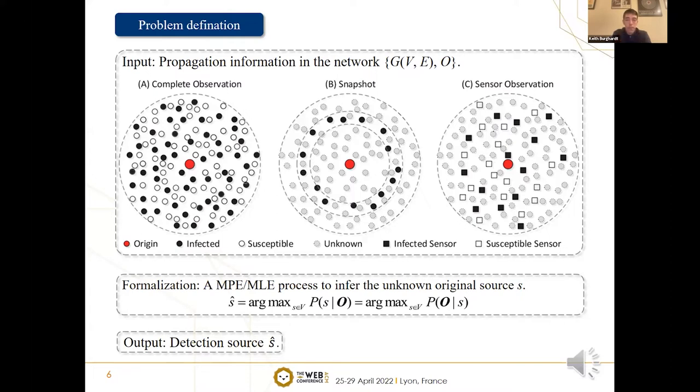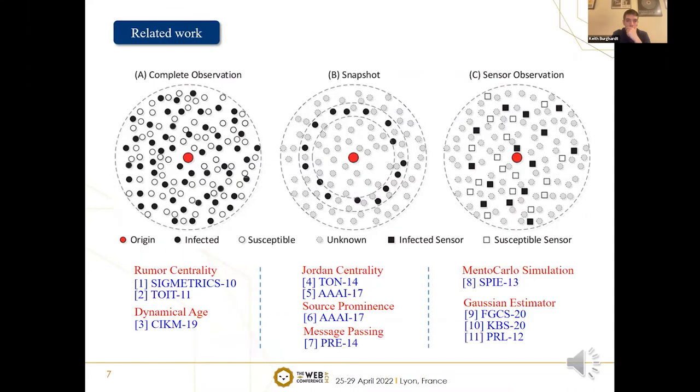The source-inferring process can be regarded as a maximum posterior estimation or a maximum likelihood estimation process, that is, using the observed propagation information to find the most likely diffusion source, or which source can most likely cause such a propagation situation. We briefly generalize the resolution idea of localization methods corresponding to the three categories of observations.